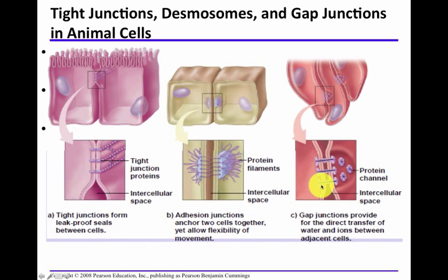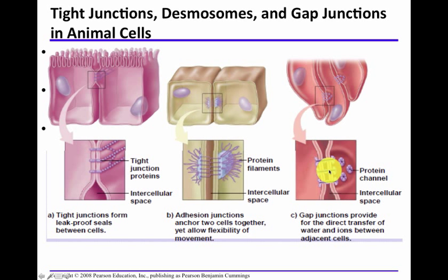Gap junctions serve as selective pores. In the heart, for example, neighboring cardiac cells communicate via gap junctions, and they beat in coordination because of them. Gap junctions form pores and channels, allowing direct transfer of water and ions between adjacent cells. The proteins forming gap junctions are grouped in cylinders of six subunits.